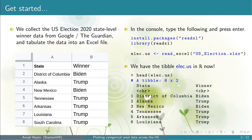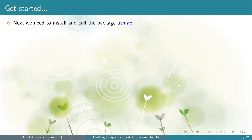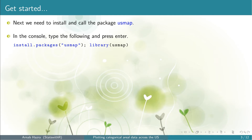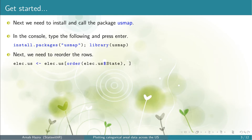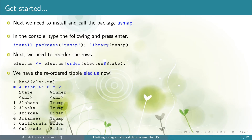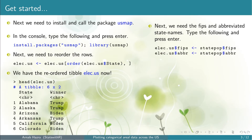Note that the rows are not in the alphabetical order of the state names. Next, before we proceed, we need the package usmap. So install and call the package usmap using the functions install.packages and library, similar to the package readxl. Next, to link with the nomenclature of the package usmap that considers alphabetical order of the state names, we reorder the rows of the table elect.us. Once we run the code, note that the rows are now arranged in alphabetical order. Next we need the FIPS and abbreviated state names to proceed further. They are available in the data statepop available in the package usmap.